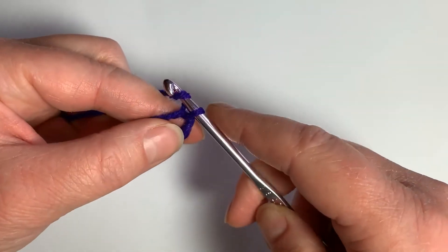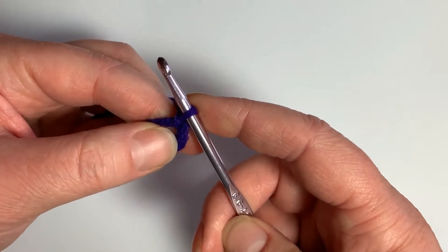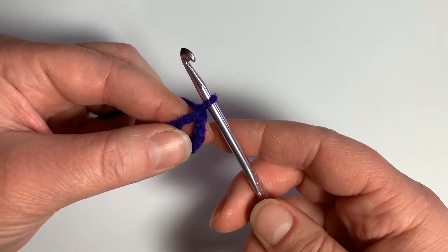Now to begin, I always start with a chain one, regardless of what I do from there. So that just gives you a little bit of buffer space so your first stitch doesn't get distorted.